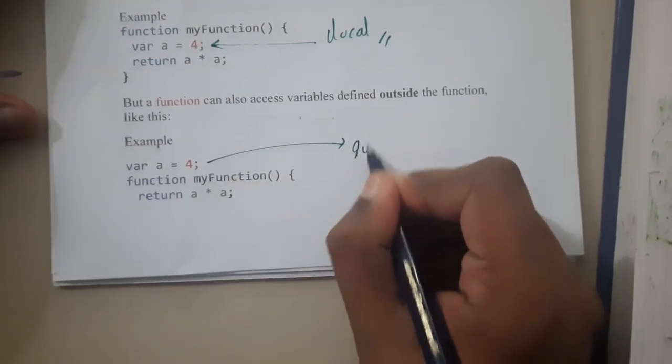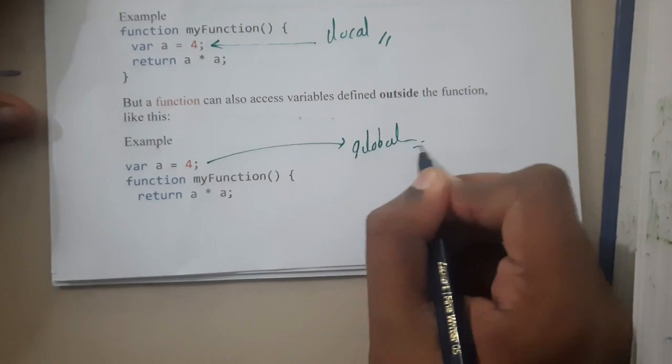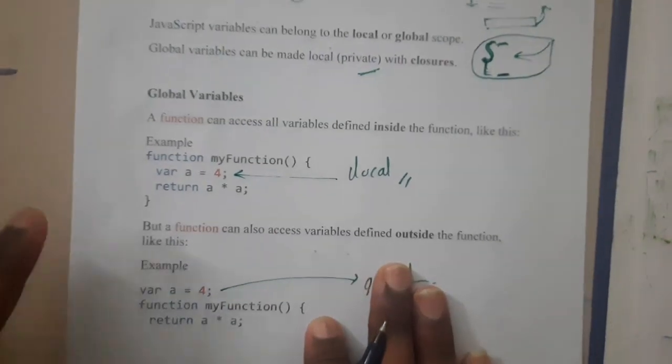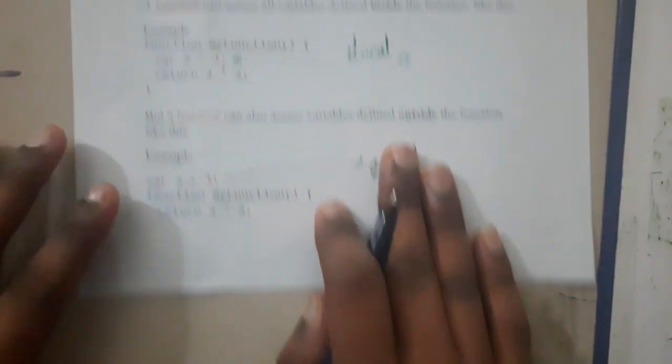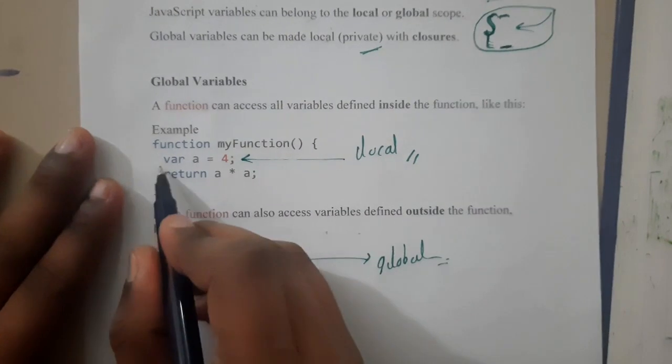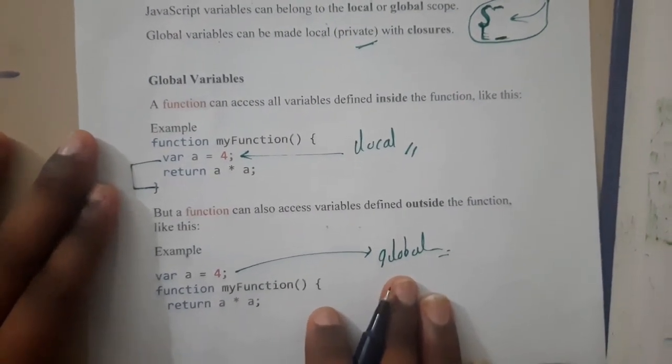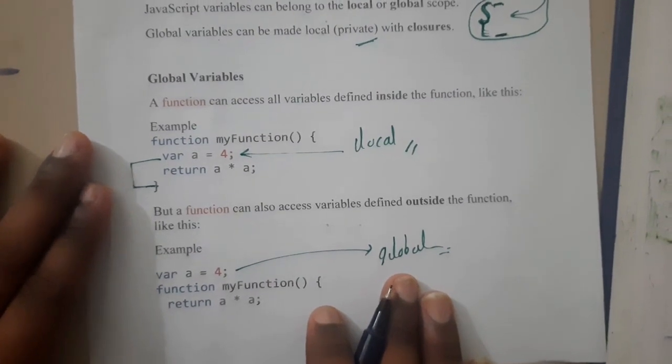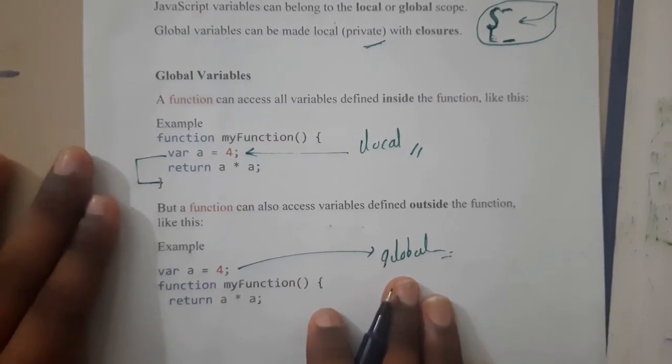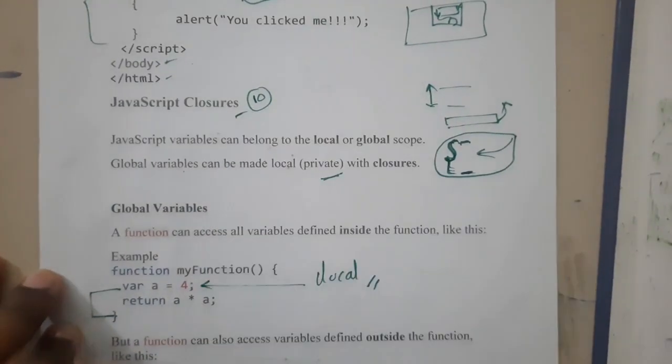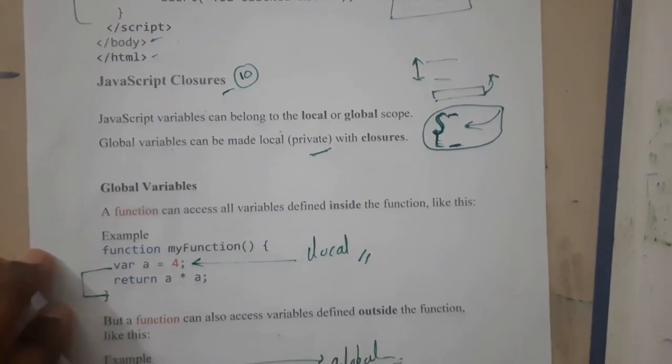I hope everyone got some basic idea about what is a global variable and what is a local variable. The lifetime of this variable is from here to here only. After that, the local variable is lost. I hope everyone got a small idea. Just give me a minute—I'll search once again for JavaScript closure examples.